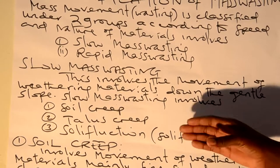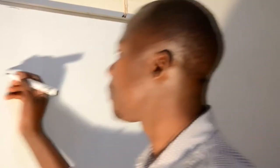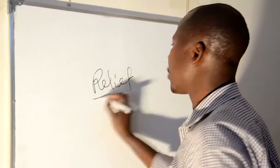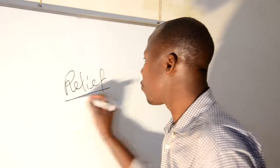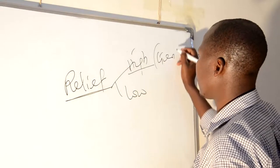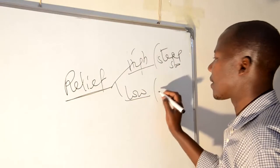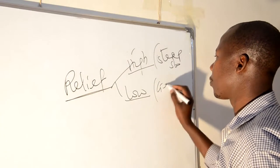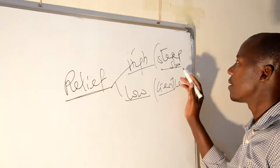Before describing the parts of slow mass wasting, we need to understand its meaning. Slow mass wasting refers to the movement of material in the area of gentle slope. Gentle is a part of relief — relief is the general appearance of the earth's surface, either highland or lowland. In highland areas, there can be gentle slope and steep slope. In lowland areas, mostly gentle slopes occur. The slope of gentle and steep is slightly different: steep slope has a higher gradient, while gentle slope is more gradual.